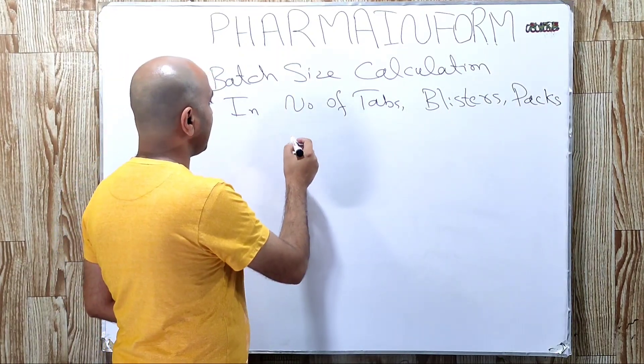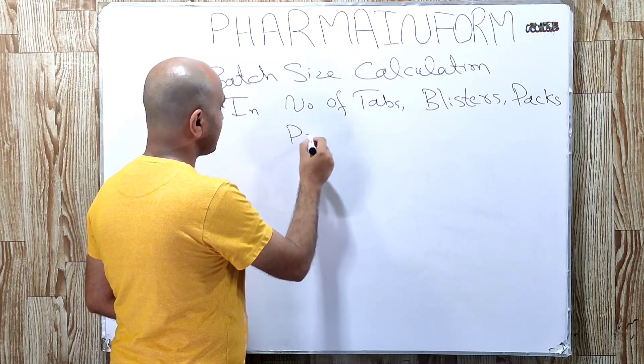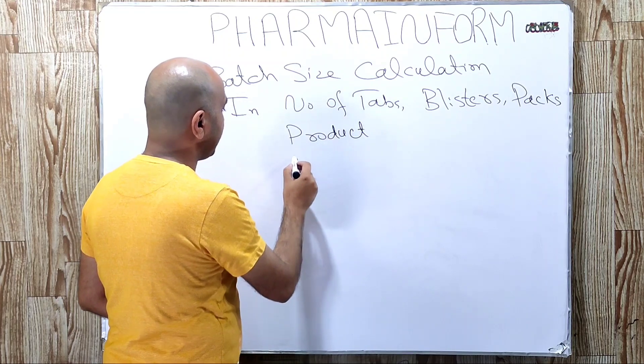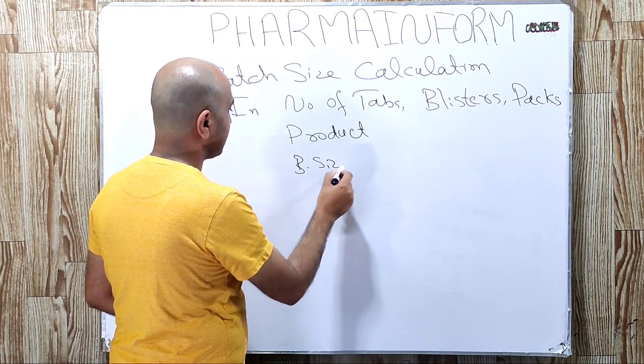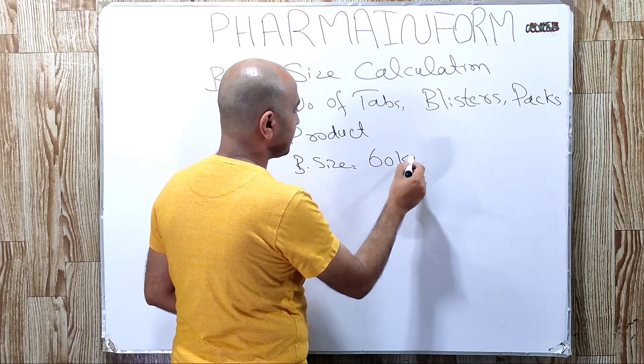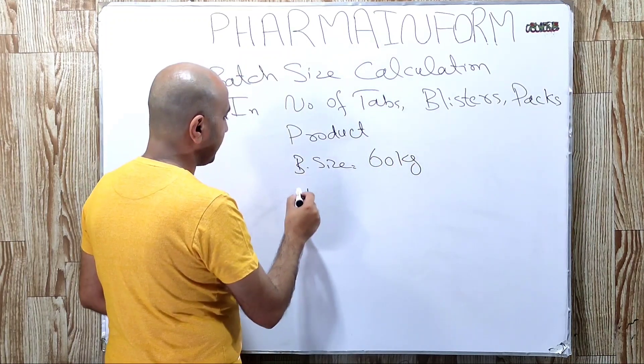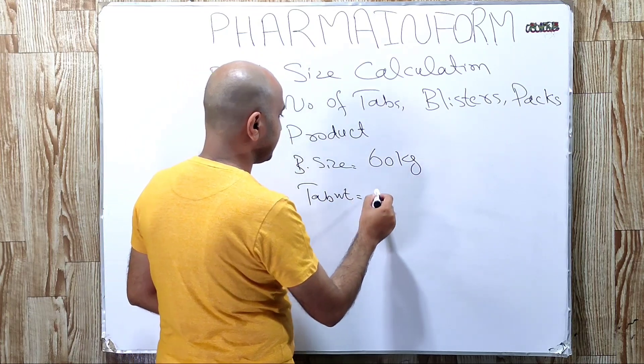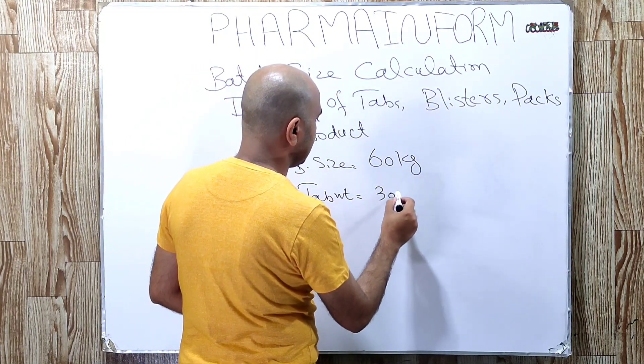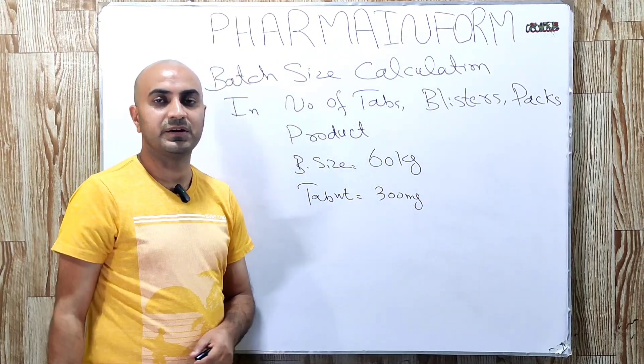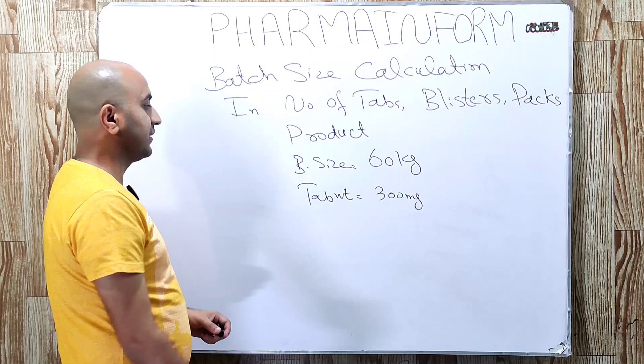Suppose we have Product A having batch size 60 kg, and individual tablet weight is 300 mg.